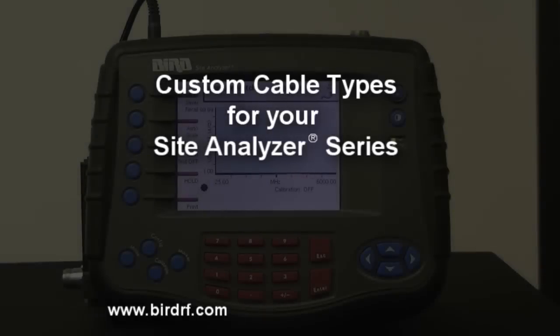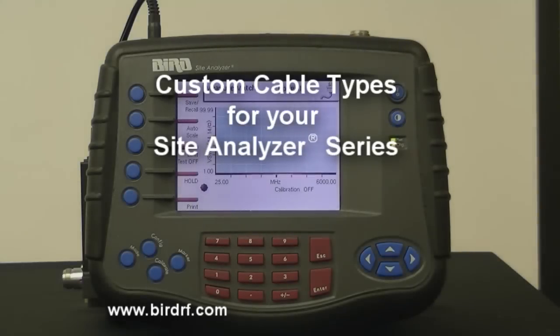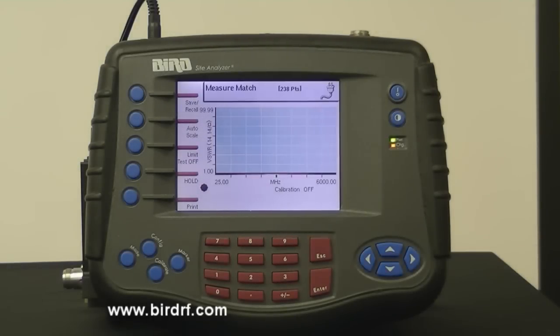Today I'm going to talk about custom cable types for your site analyzer. The site analyzer contains a list of cable types that will set the values for velocity of propagation and cable loss automatically when selected.